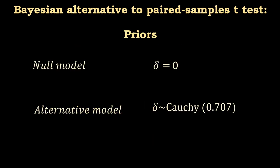Okay, in terms of priors, it is the same as in the independent samples t-test. The null model is fixed. The delta is fixed to zero. In the alternative model, we use a Cauchy distribution with a parameter of 0.707.